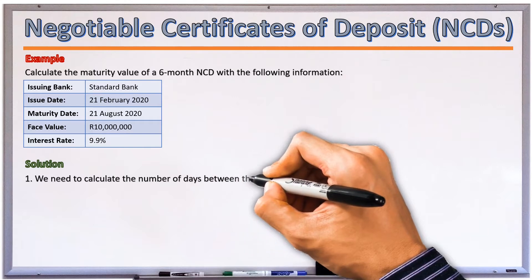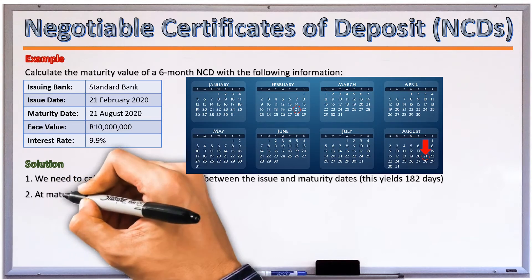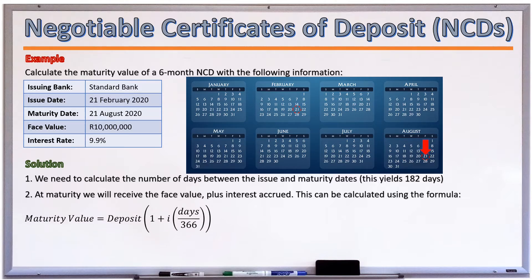Solution: We first need to determine the number of days in the 6-month period of the NCD — that is, between the 21st of February and the 21st of August 2020 — and look out for any public holidays. Neither date falls on a public holiday, so we don't need to apply any business day conventions. Counting the days between those two dates, there are 182 days. At maturity, we will receive the face value plus interest accrued, calculated using the formula: maturity value = deposit × (1 + interest rate × days/366), bearing in mind that 2020 was a leap year.